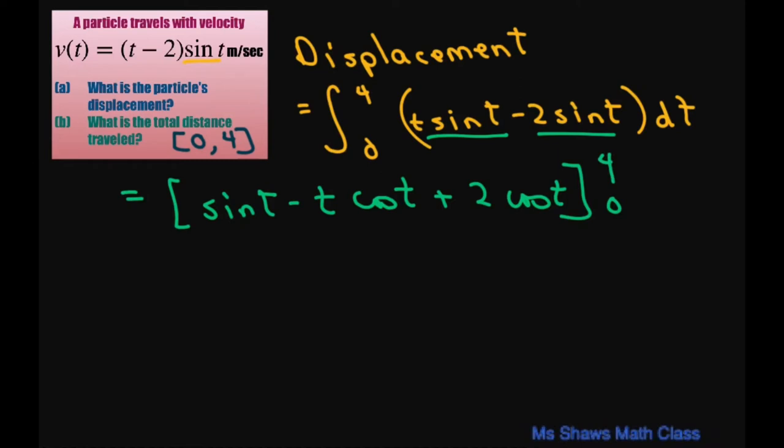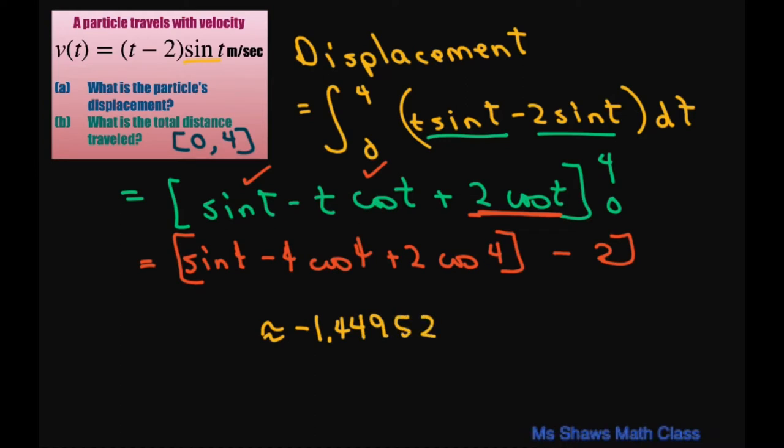And we're evaluating this from 0 to 4. This is going to equal sine of 4 minus 4 cosine of 4 plus 2 cosine of 4. And then we're going to have minus, when you substitute in 0, we're going to get a 2 here. These two will zero out. So put this in the calculator,